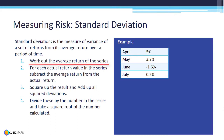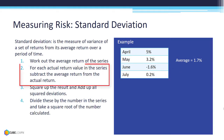Step 1: Work out the average returns of the series. The average return of the series is 1.7%.